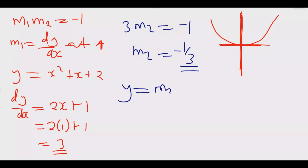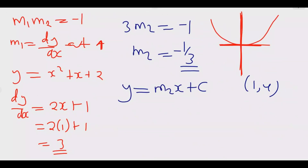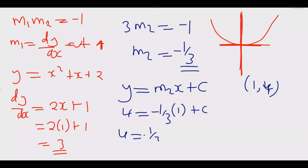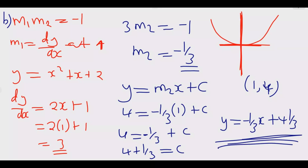Using Y = m₂x + c with the point (1, 4): 4 = (−1/3)(1) + c, so c = 4 + 1/3 = 13/3. Therefore the equation of the normal is Y = −(1/3)x + 13/3. Once you have that, you're good to go and you've earned all the marks for that part.